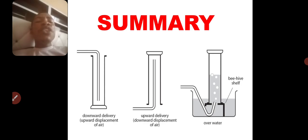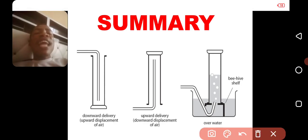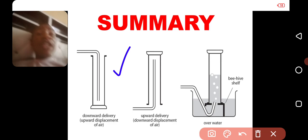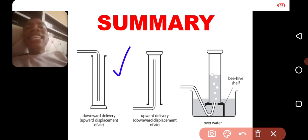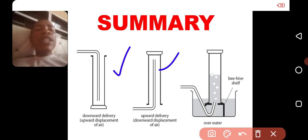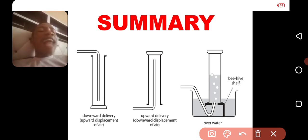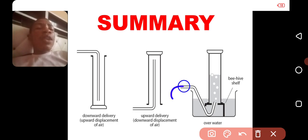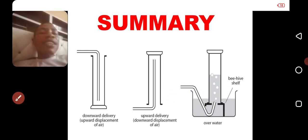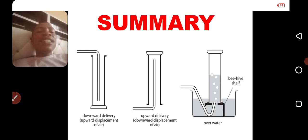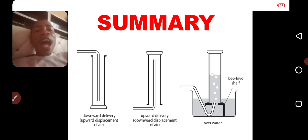To summarize: when the gas is denser than air, use downward delivery — delivery tube pointing down. When the gas is less dense than air, use upward delivery — delivery tube pointing up. When the gas is insoluble in water, collect the gas over water. That concludes the video on how to collect a gas using solubility in water and density relative to air. Thank you.